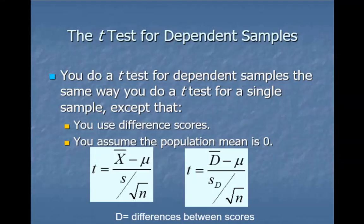So this is the theory behind what's happening with the dependent t. Now we're going to do the six steps to inferential statistics with an example so you can see how this works in practice.